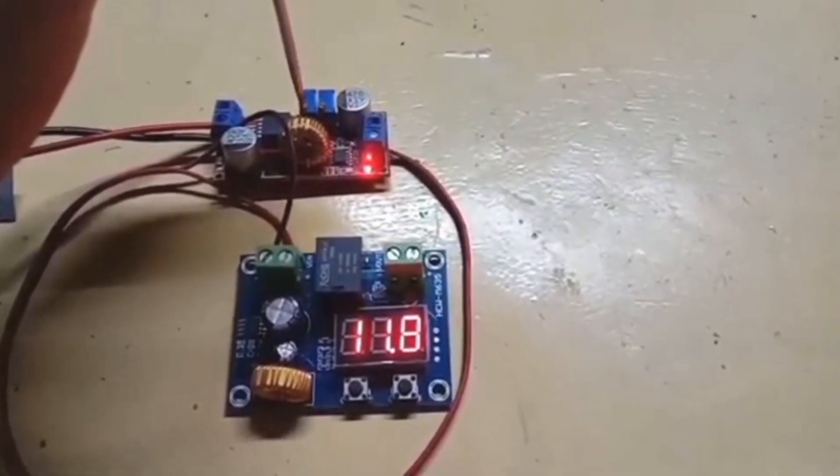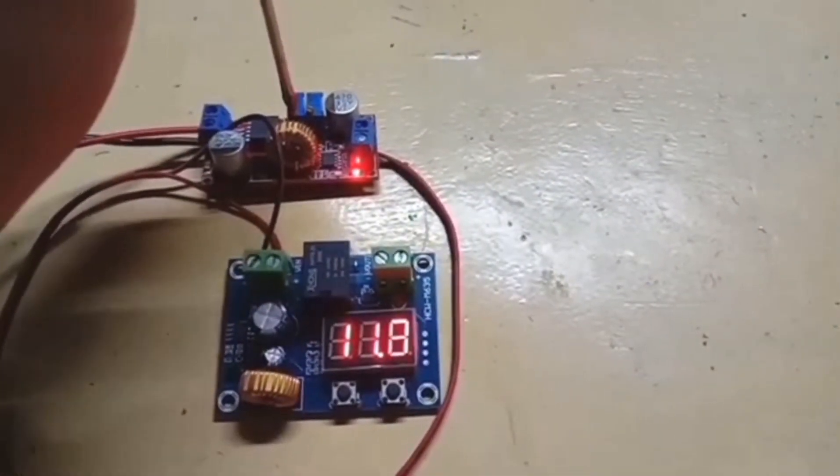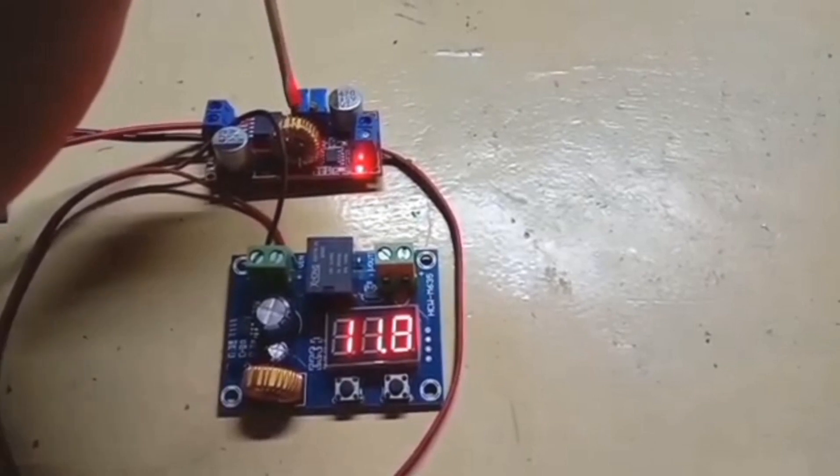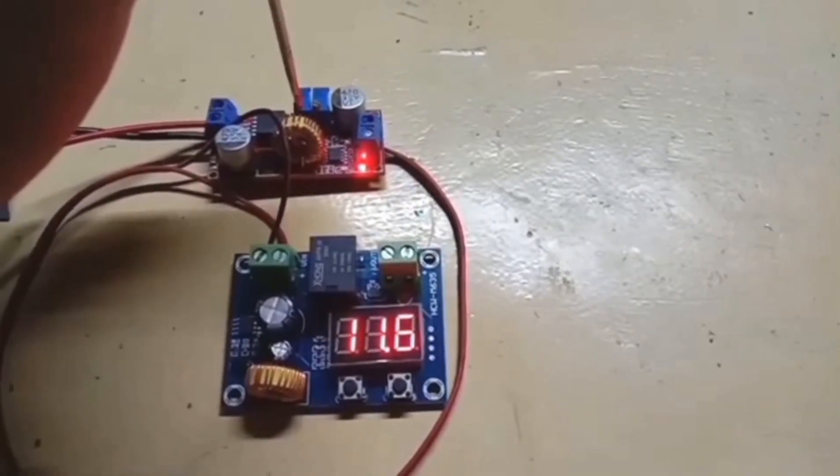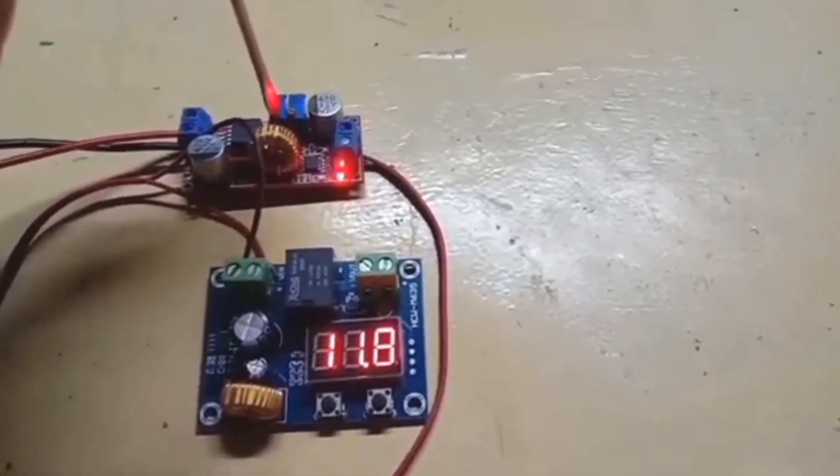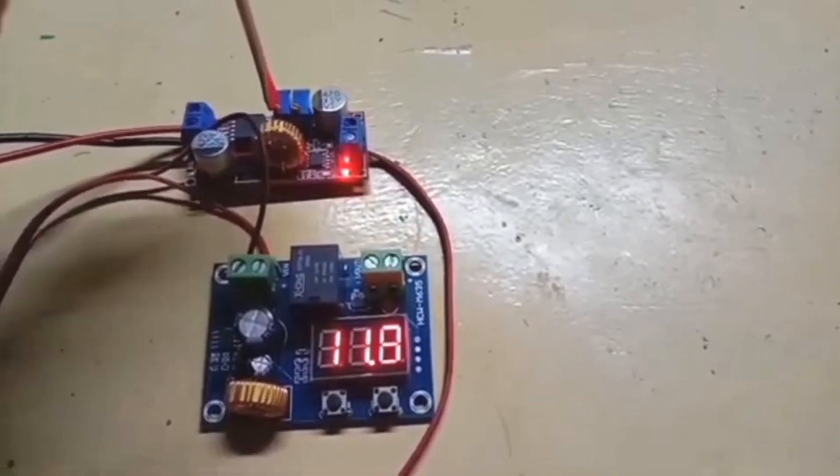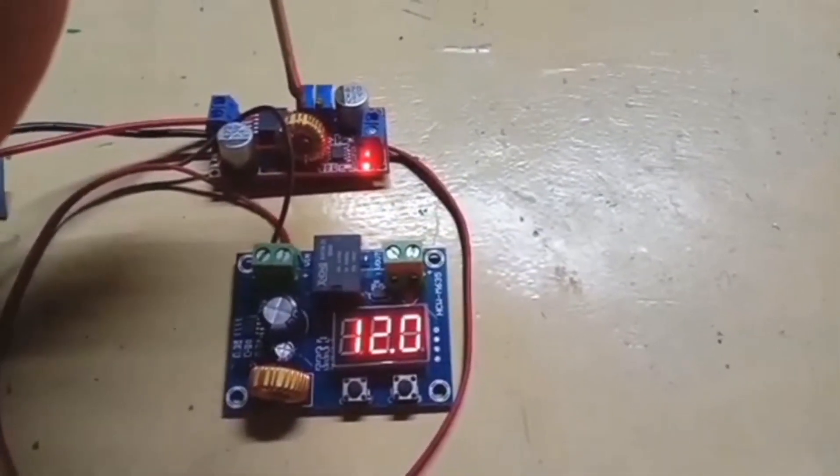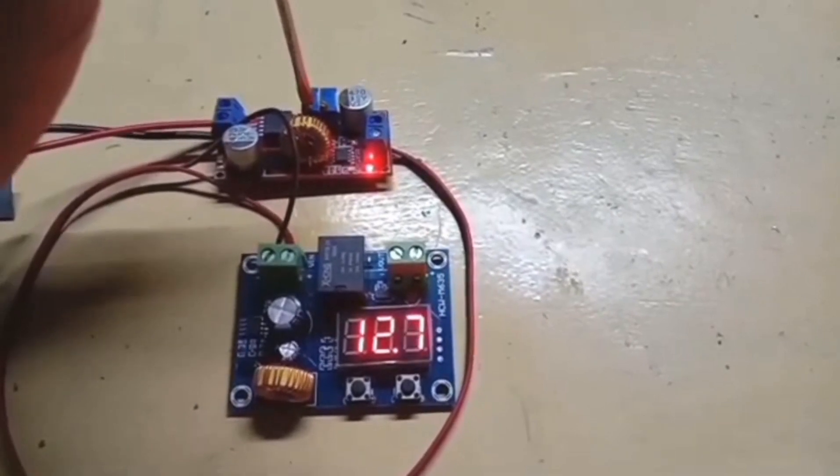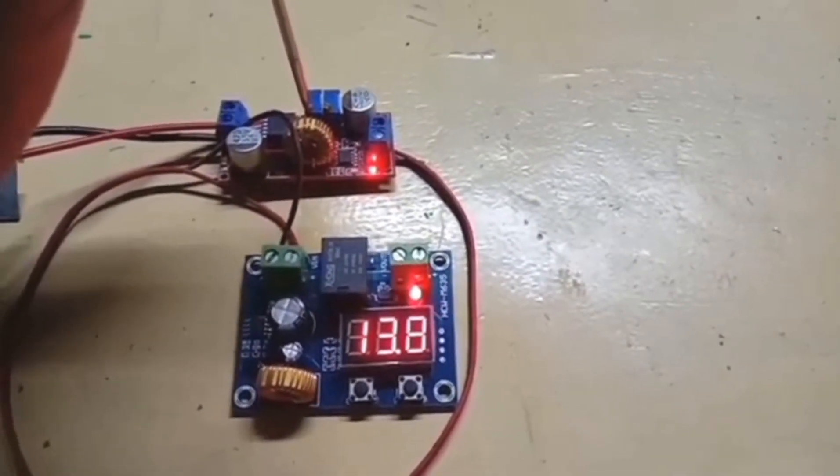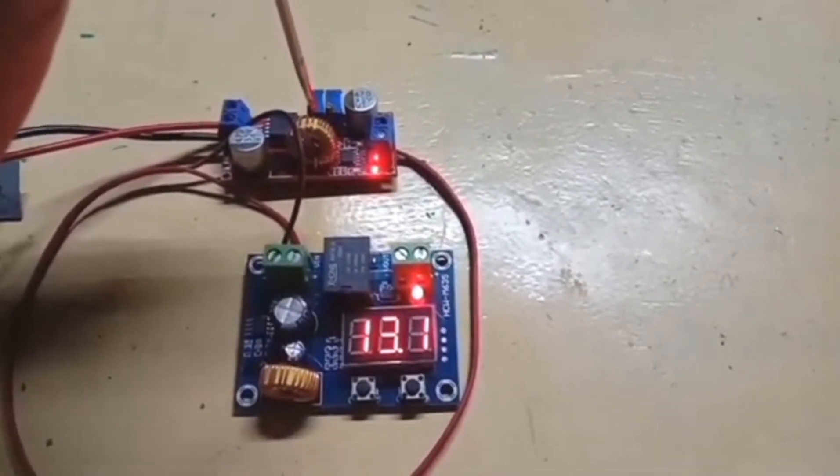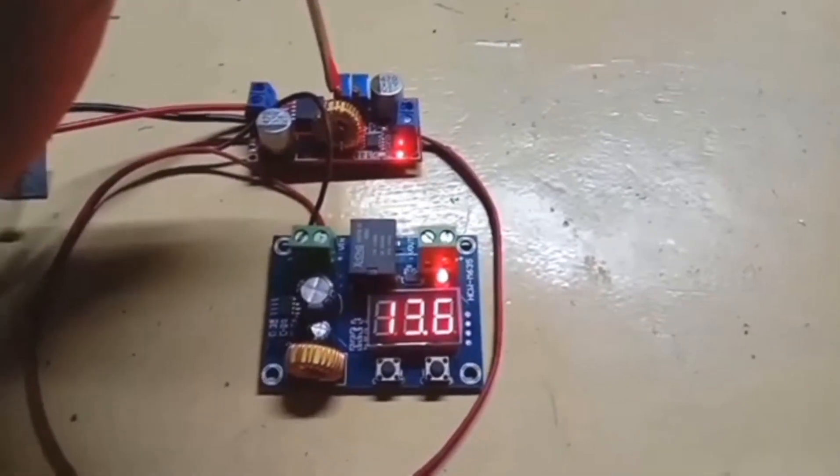Now we're going to check the discharge mode at 13.7. See, the light turns on at 13.7.